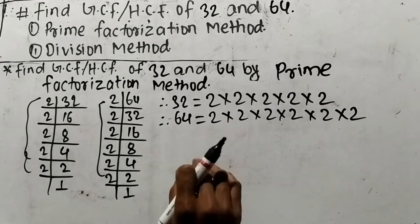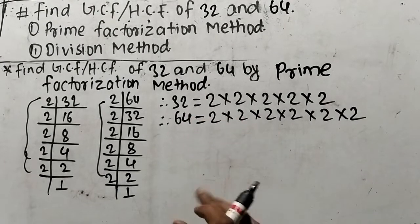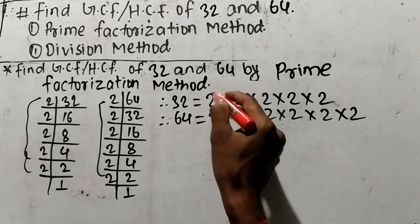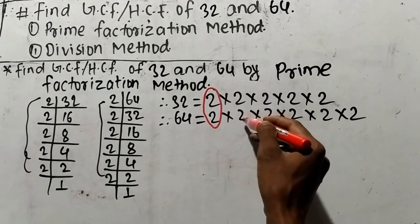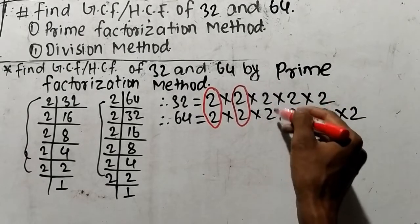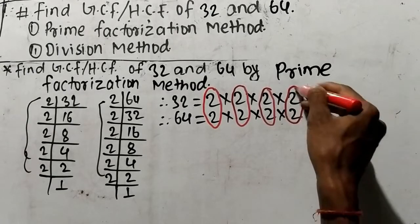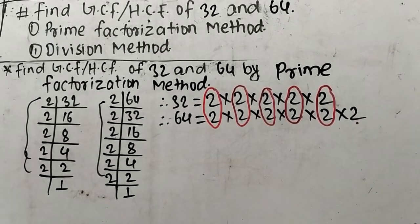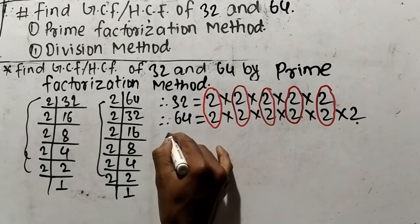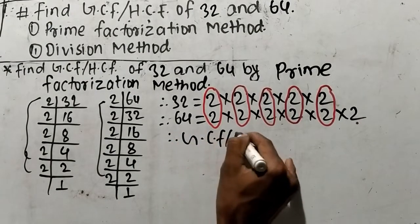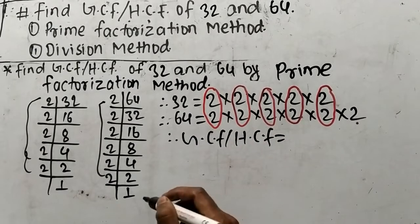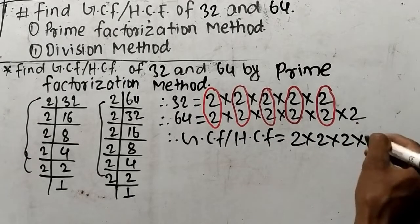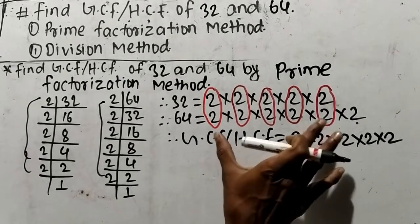So we have taken out the prime factors of 32 and 64. Now we find out the common factors. Here 32 has five 2s and 64 has six 2s, so there are five common factors of 2. The remaining one factor of 2 in 64 is a non-common factor. As you know, GCF or HCF is the product of all common factors only, and here we have 5 common factors of 2.